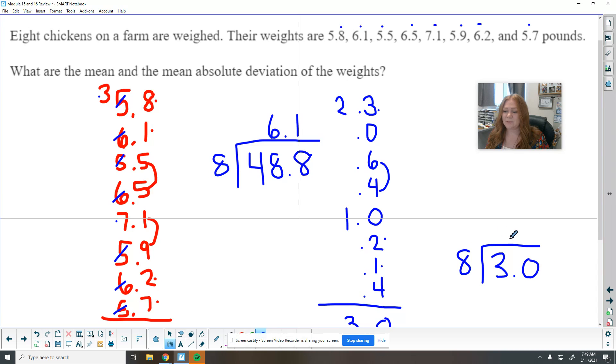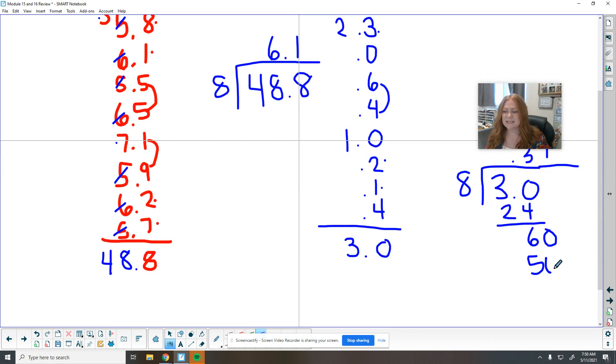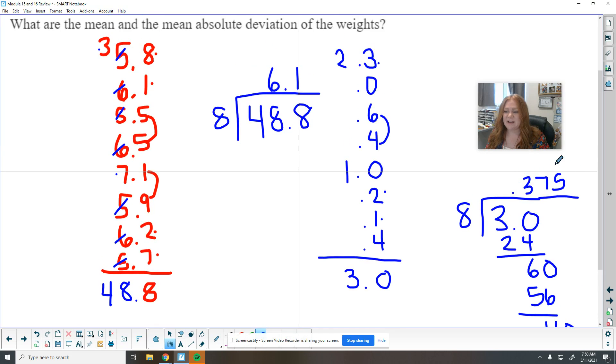So can't go into 3. But I can go into 30, 3 times, which is 24. And bring down that. 8 goes into 60, 7 times is 56. And bring down a 4. 8 goes into 40, 5 times.